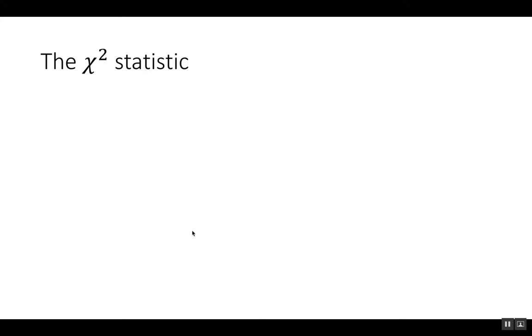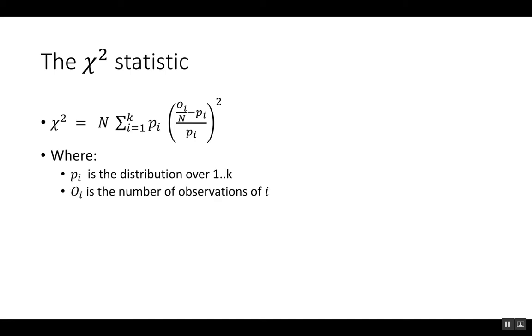The chi-square statistic is defined by the following formula. In this formula, p_i is the true distribution, o_i is the number of observations of the element i, and n is the total number of observations.